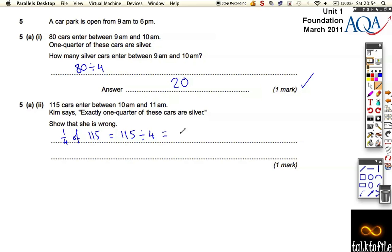Well, when you come out with that, you get 28.75. And clearly, you cannot have 0.75 of a car. Even a small car doesn't count as a three-quarters car or a 0.75 car. It's either a car or it's not a car. You count it, no matter how small or big it is. So that's why she's wrong.